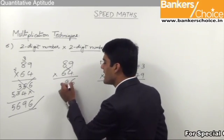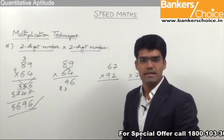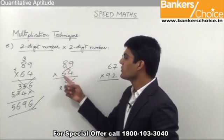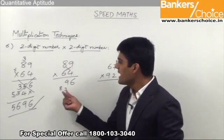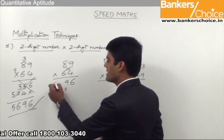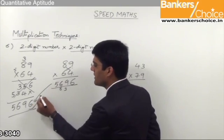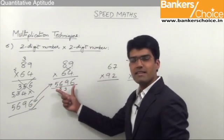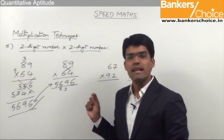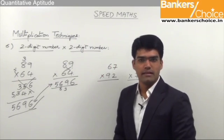The last and final step is to multiply both the 10 spaces — that is 8 into 6 is 48. 48 plus 8 is 56. So the answer here is 5696. As you can compare with the general method, the answer 5696 has been obtained without writing the intermediate steps. That is the advantage of multiplying two-digit numbers in this technique.